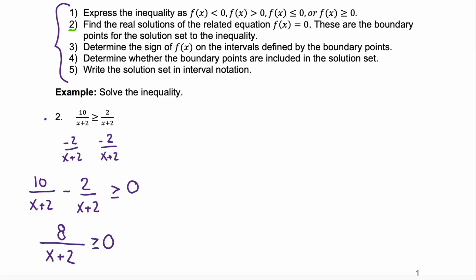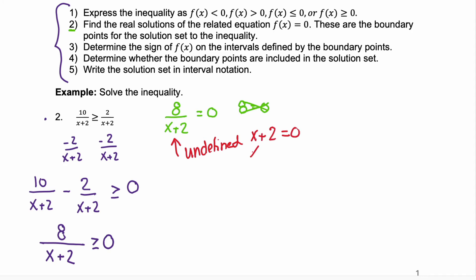Step two is to find the real solutions to f(x) equals 0. When does 8 over x plus 2 equal 0? That would be whenever the numerator equals 0. Well, 8 equals 0 is a contradiction, so that doesn't happen. We can't get a boundary here from solving the rational expression equal to 0. The only boundary we're going to have is when our rational expression is undefined — when the denominator x plus 2 equals 0, or when x equals negative 2. So our only boundary point is x equals negative 2 for this example.